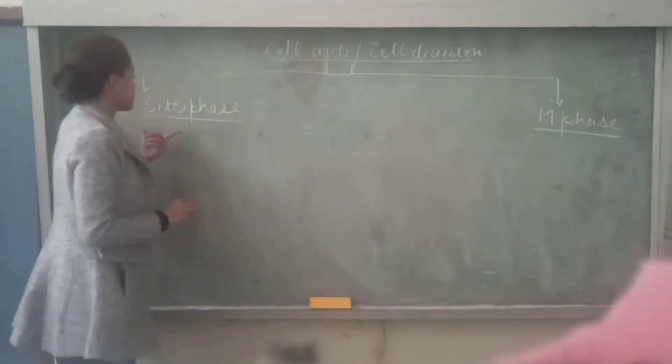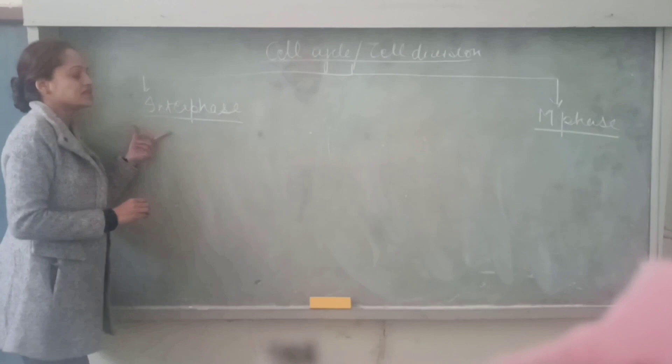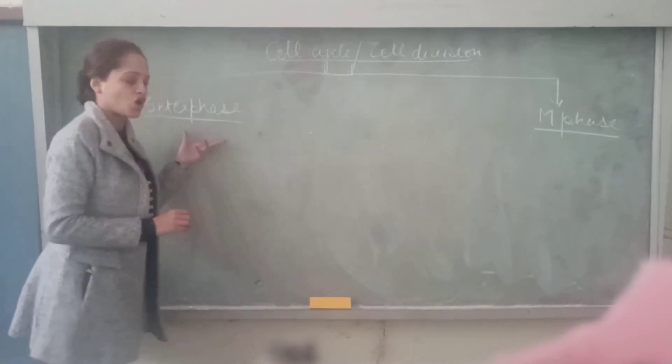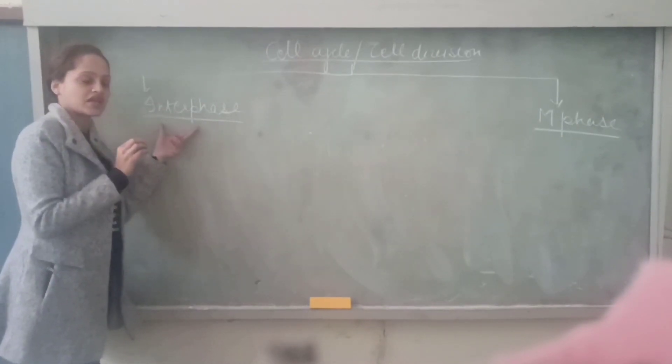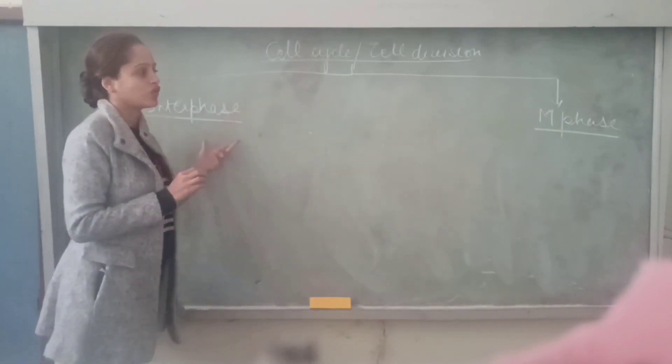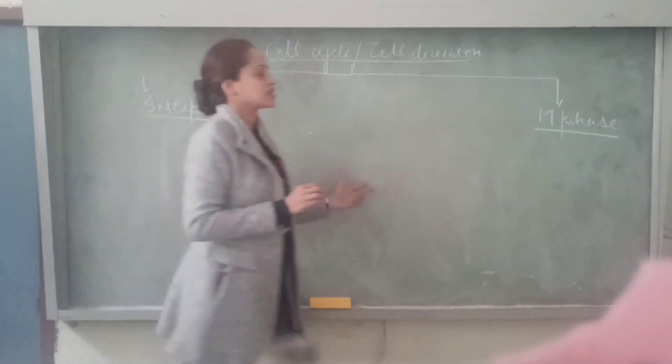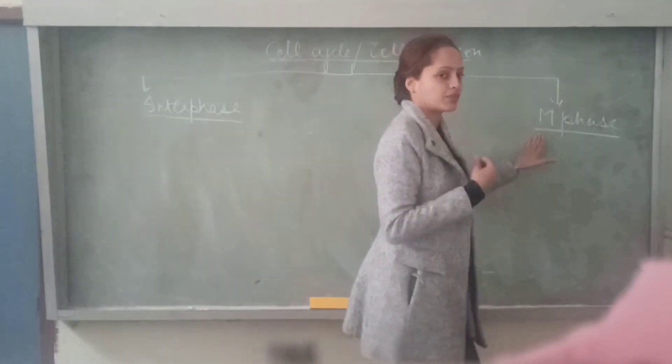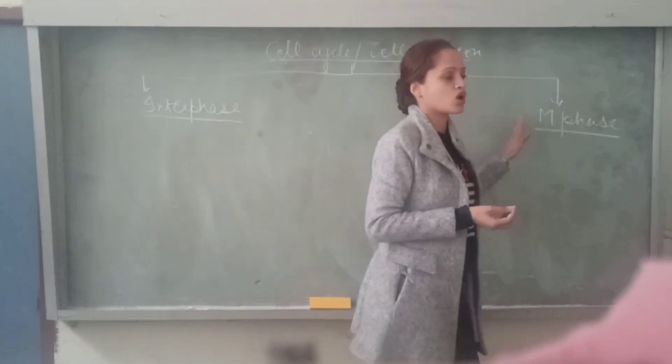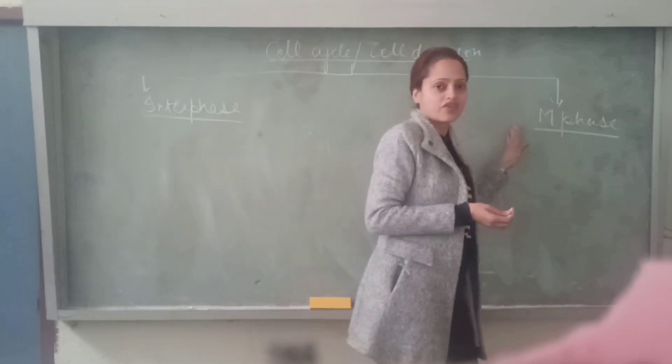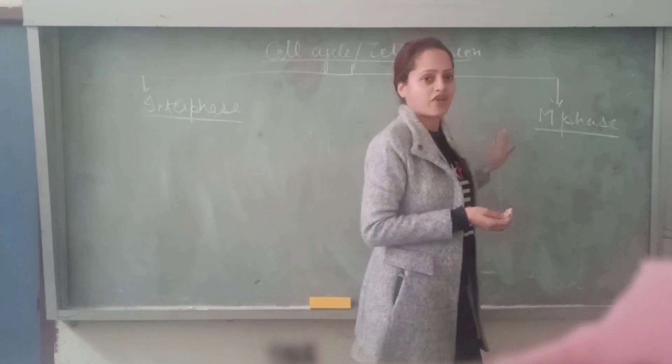This interphase is also known as the prepared phase, because the cell prepares itself here for cell division or for M phase. This M phase stands for multiplication. This phase is also known as multiplication phase or division phase.